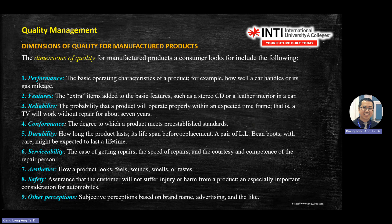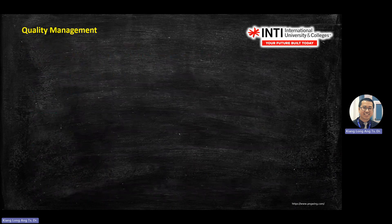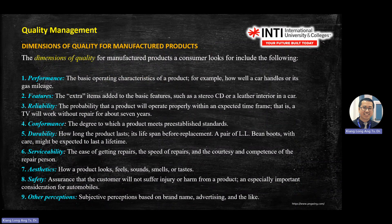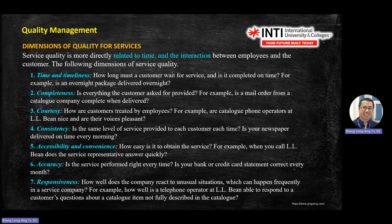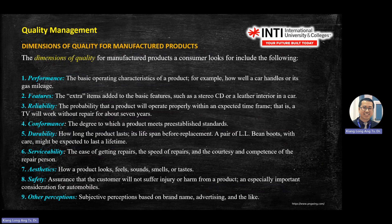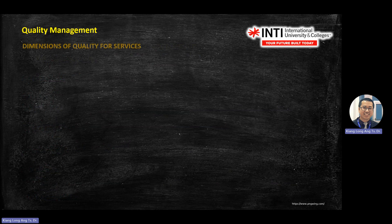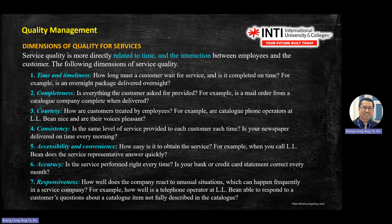These are the dimensions of quality. If you have a chance to go into the manufacturing industry and walk into the QA department, you will hear keywords like performance, reliability, and so on. The previous slide showed dimensions for manufactured products — one to nine. It's a bit different for services, which goes from one to seven. Don't confuse them — there are two different dimensions: one for services, one for physical products.